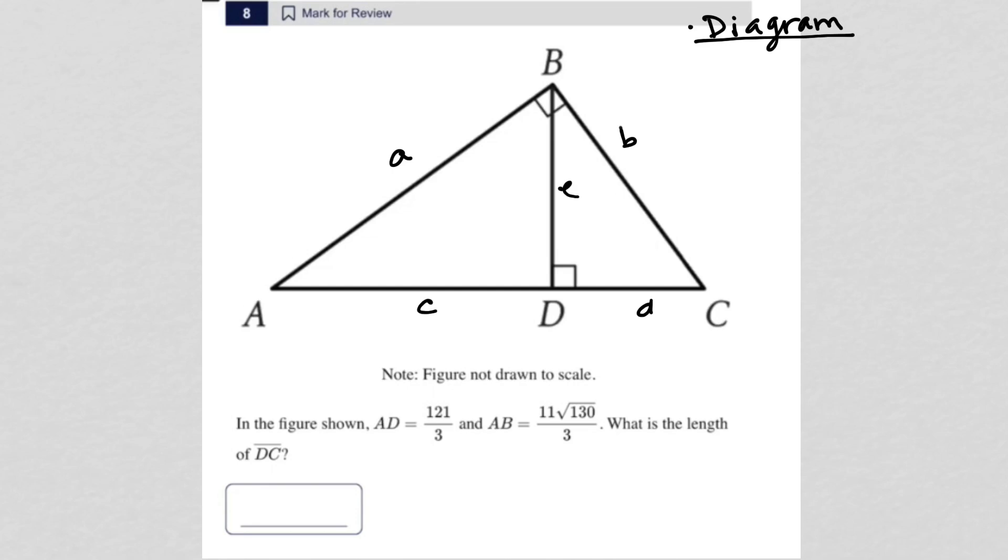Whenever you have a setup like this, which is basically a right triangle, right? So triangle BAC is one large right triangle, and we've drawn an altitude from the right angle. That's important. That altitude is BD, and by doing so, we split that right triangle into two separate smaller right triangles. Whenever you have that situation, we can do what I'm going to show you now.